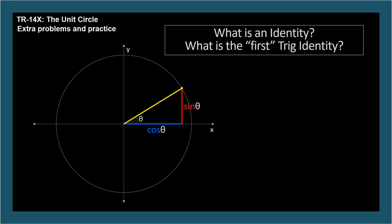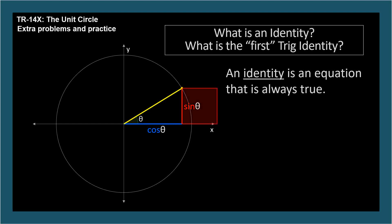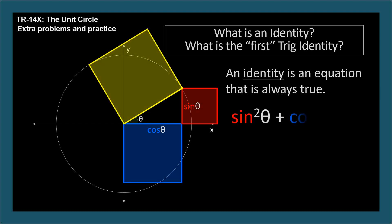What's an identity and what's the fundamental trig identity from the video? An identity is an equation that's always true for all variable values. The fundamental trig identity is derived straight from the unit circle with the Pythagorean theorem. Sine squared theta plus cosine squared theta equals 1.